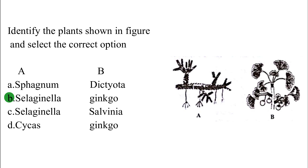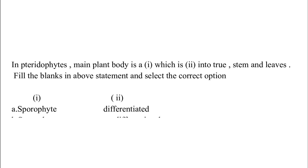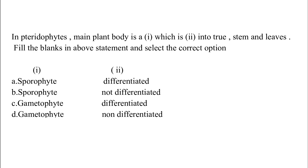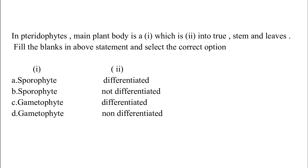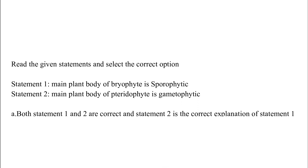Picture A represents Selaginella and picture B represents Jingo. In pteridophytes, the main plant body is 2n, with a true stem and leaves. Fill in the blanks and select the correct option. Option A: sporophyte differentiated. Option B: sporophyte non-differentiated. Option C: gametophyte differentiated. Option D: gametophyte non-differentiated. The correct answer is Option A — sporophyte and differentiated.